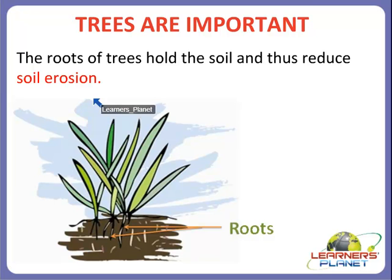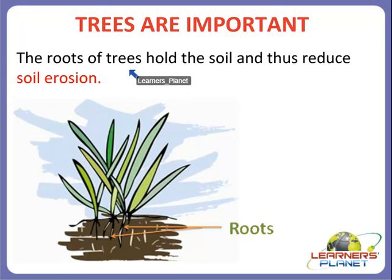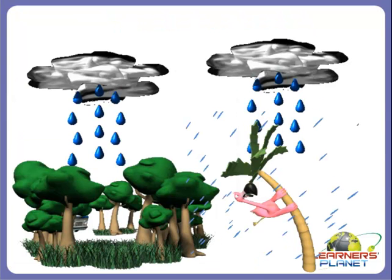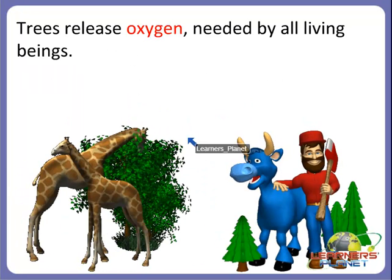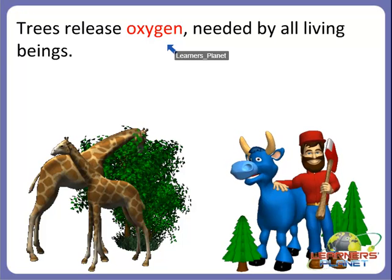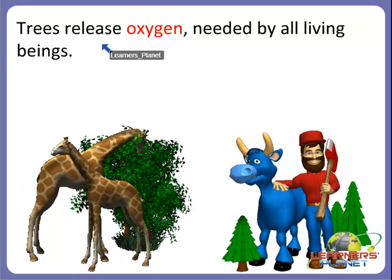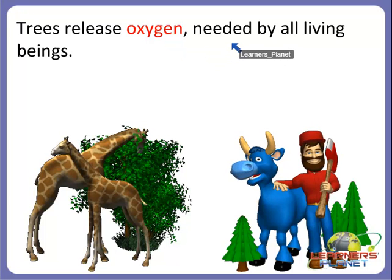Trees are very important to us and they help us in many ways. The roots of the trees hold the soil and reduce soil erosion. Trees are also important for rain — trees help in making rain, and that is why we can store water in various forms. Trees also release oxygen gas, which is very important for all the living beings on Earth.